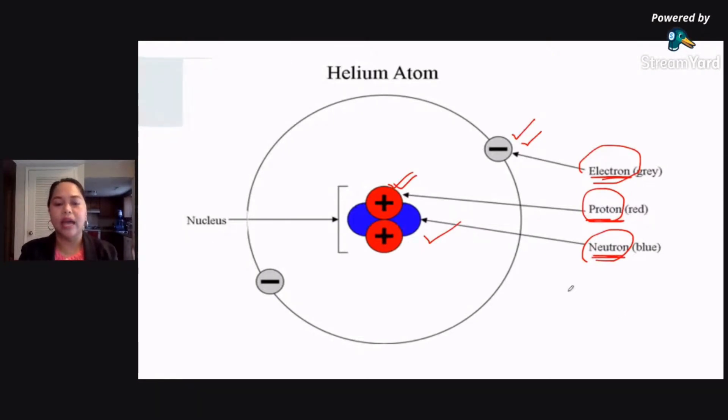Now, another difference in their case would be the location. So pag tinignan mo yung atom, magkaiba din ang kanilang location. Sa nucleus, sa gitna ng iyong atom, yung makikita mo lamang would be your protons and your neutrons. Only protons and neutrons are those that are found in the nucleus of the atom.